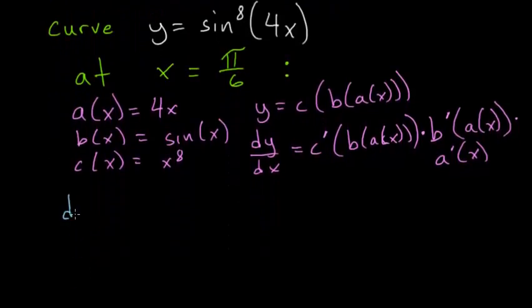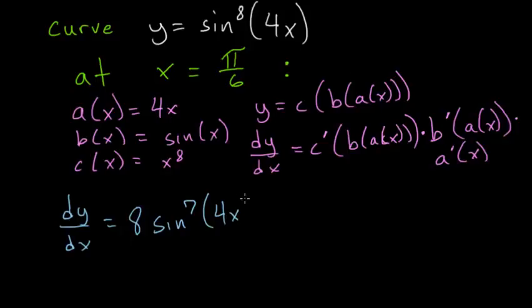So dy dx, we'll take the derivative of this outermost function, so we'll bring the 8 down in front and subtract the exponent by 1. We'll leave the inner functions alone, and then multiply by the derivative of